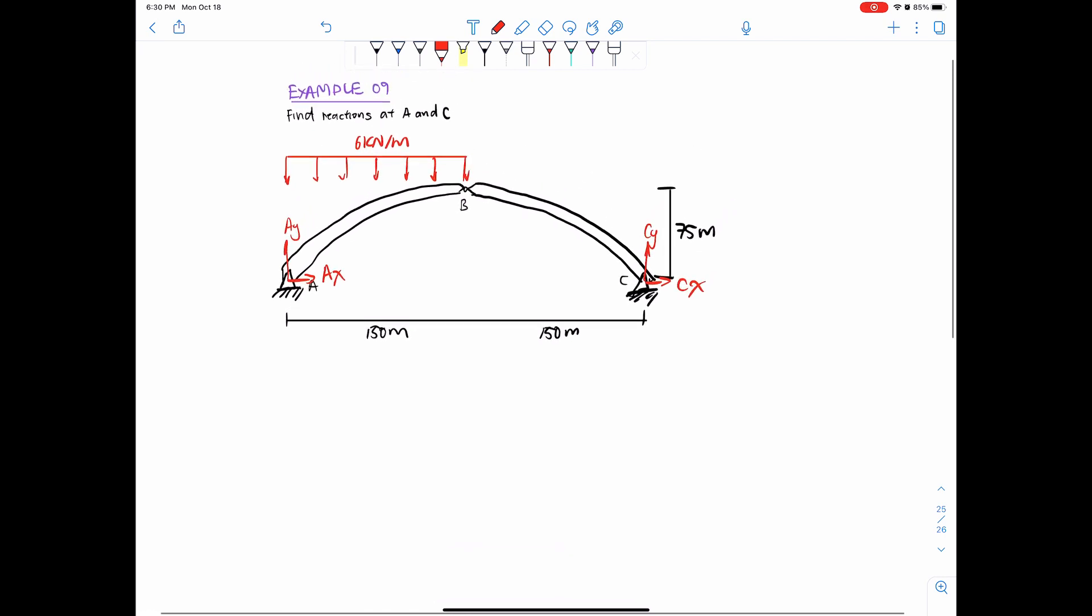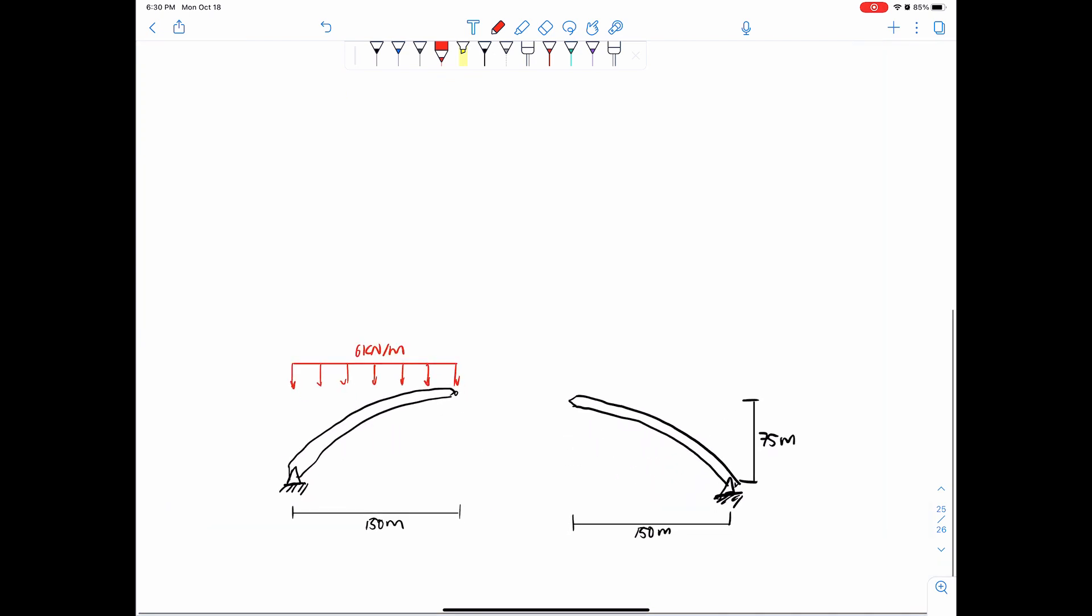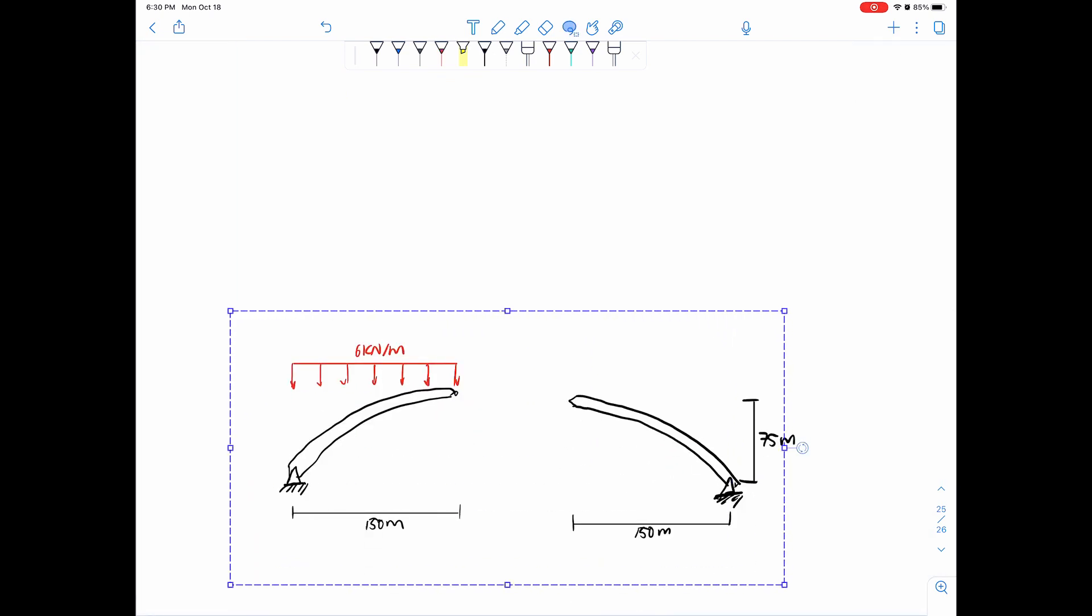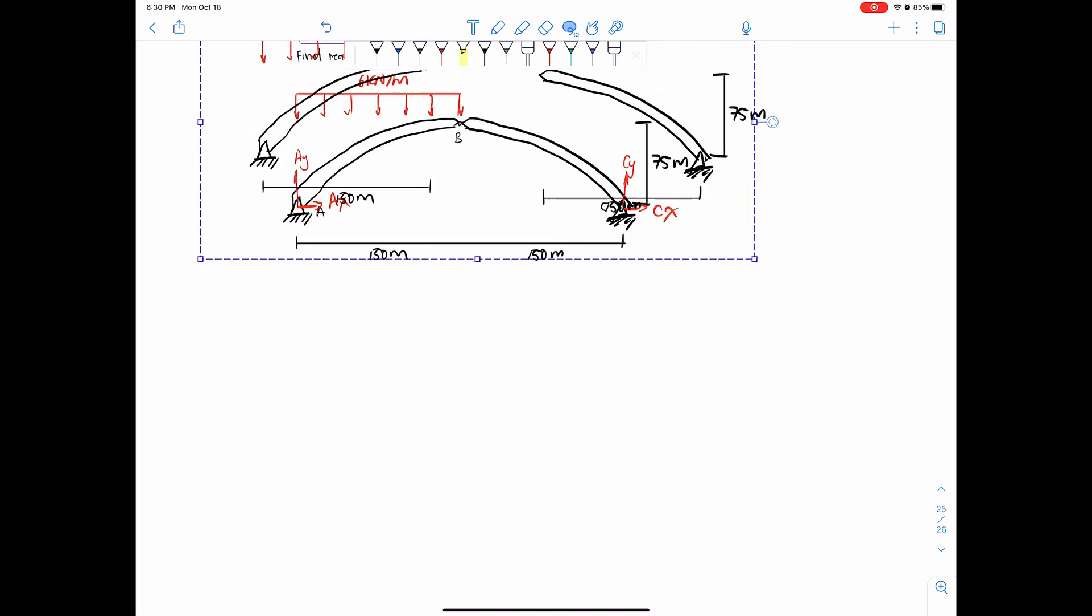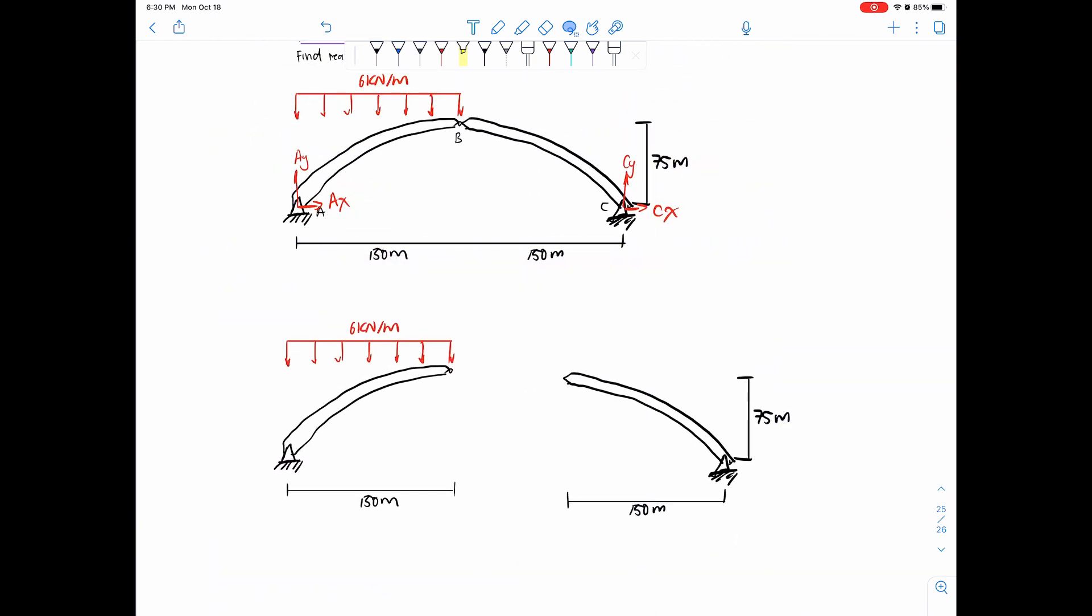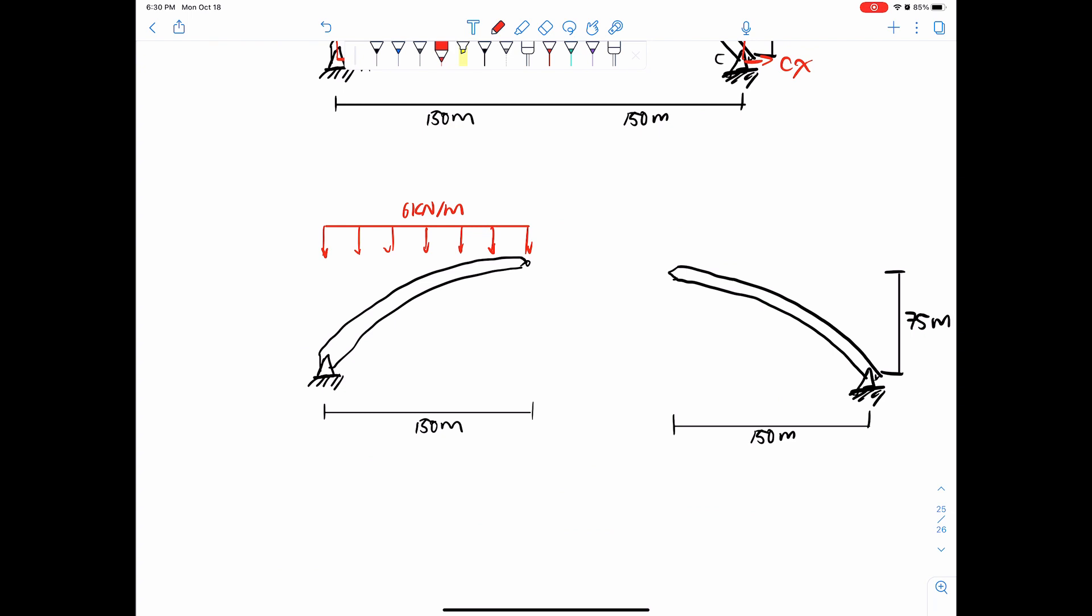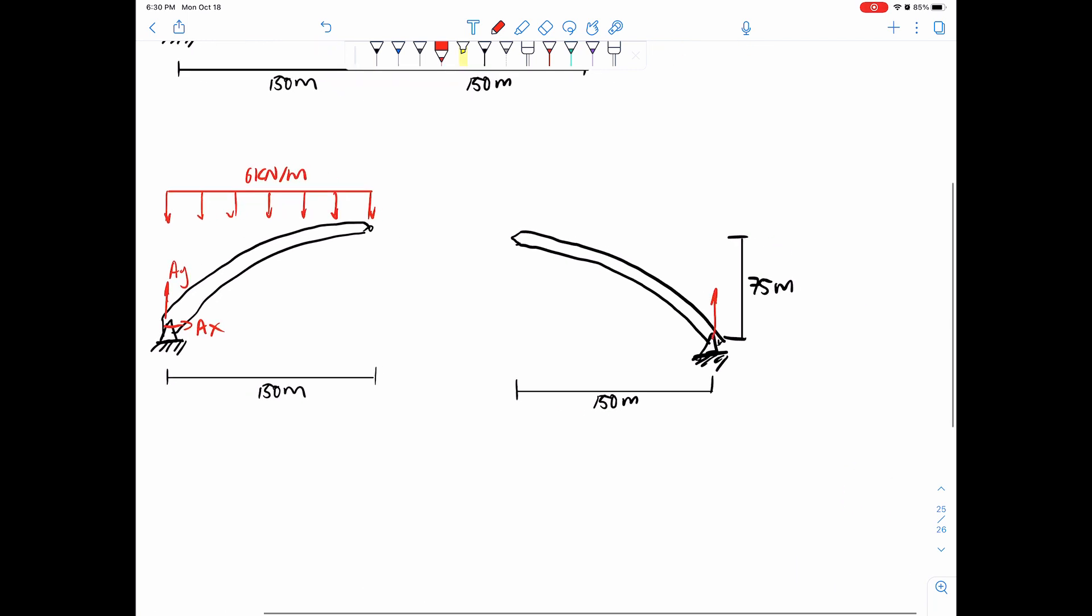So what we need to do is we need to split the system up. So I've gone ahead and just redrawn this same beam, just split up. So once again, we're solving for AY, AX, and then CY, and then CX.